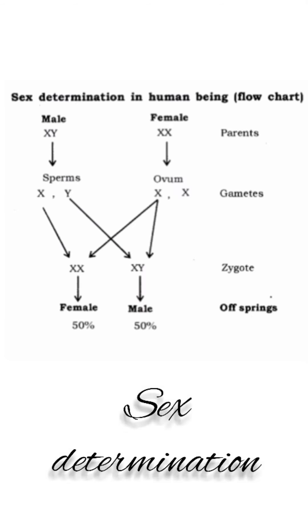The haploid gametes — ova — produced by the female have the sex chromosome X. Whereas in the male gametes, the sperm, the sex chromosome could either be X or Y.